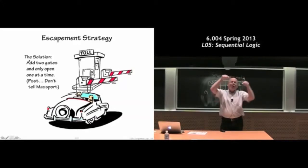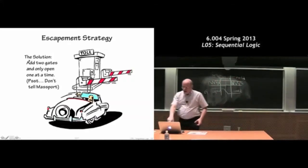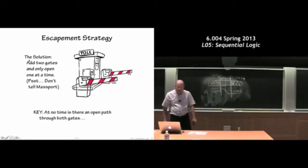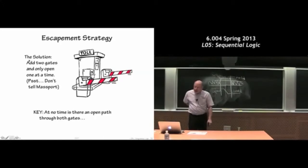And it's such that it has two teeth that either catch the gear on one side or spin this way and let the gear advance one cog. And so the mechanism that translates the continuous energy of the spring to a bunch of digital movements where the gear advances jerkily one cog at a time, that's the escapement mechanism. And I've just described the toll booth analog of that mechanism. And the key is that at no time is there a path through both gates.